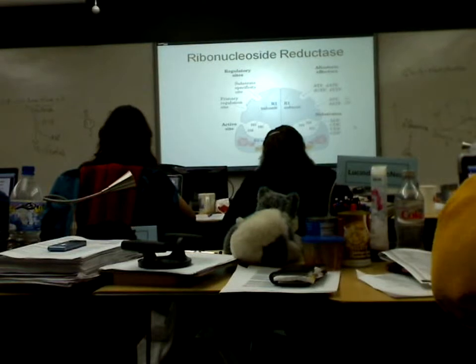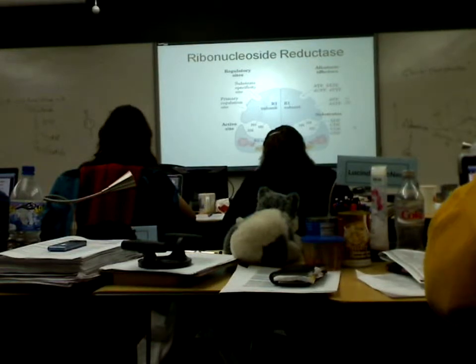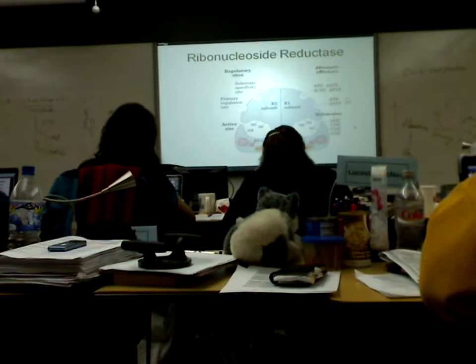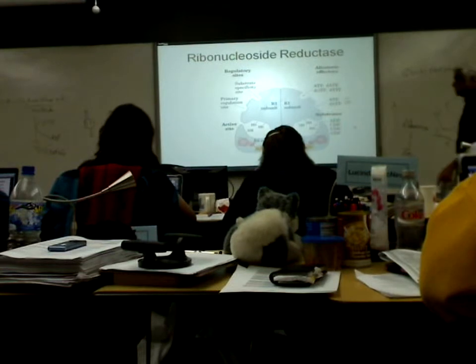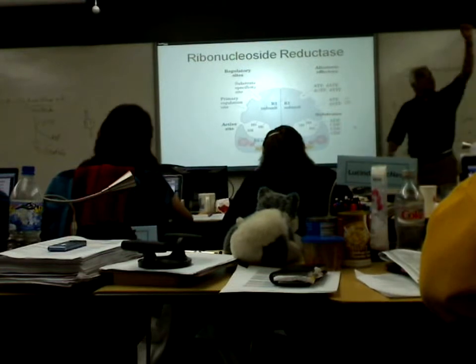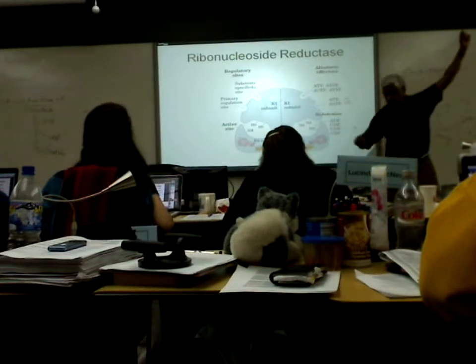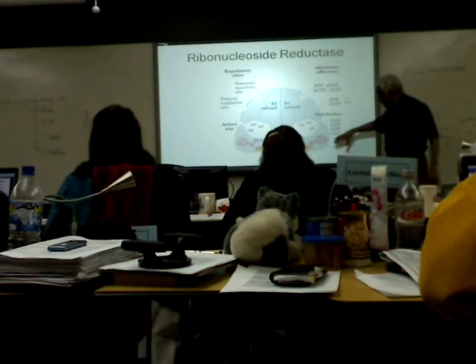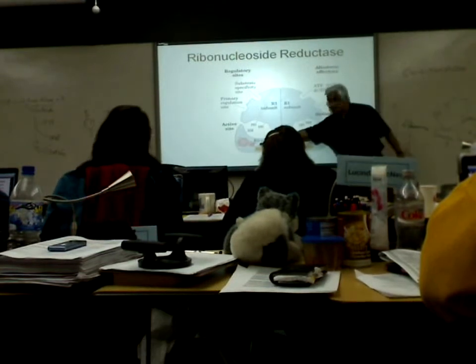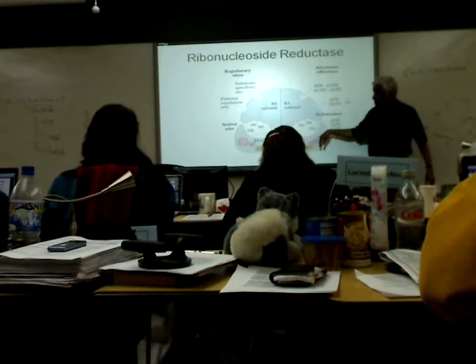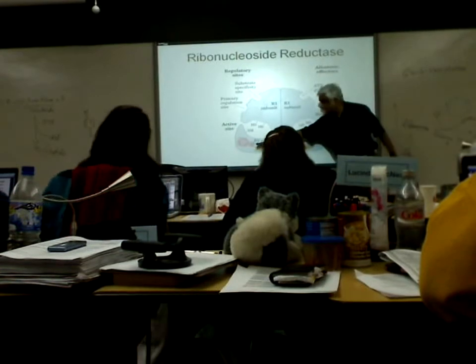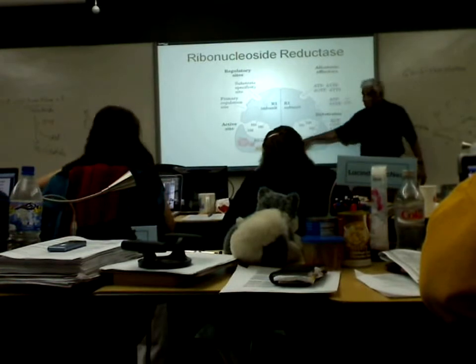One electron means radicals; two electrons means ionic mechanism. Some of those radicals — one electron passes through from here to here to here to here. These guys are involved. I won't go into the details, but I must say a radical is involved.